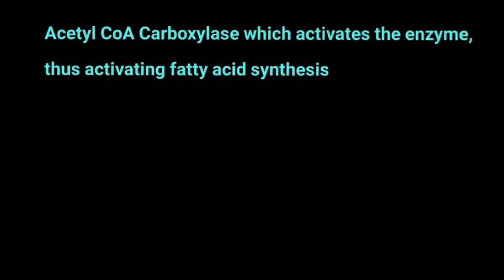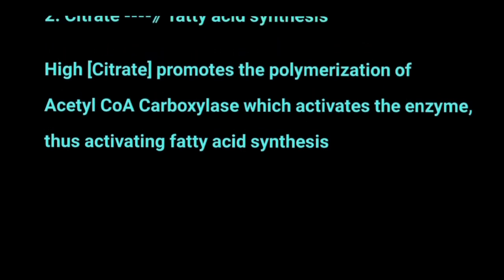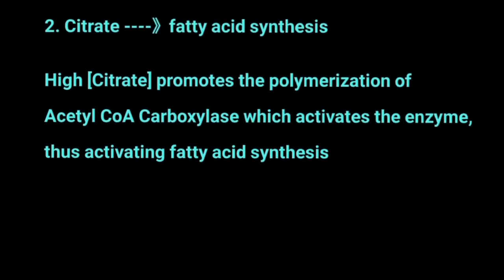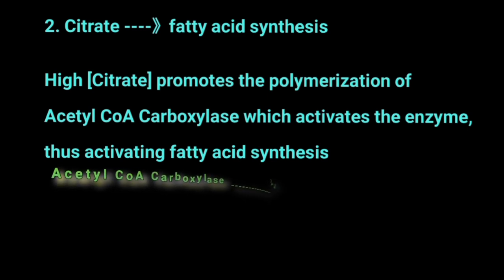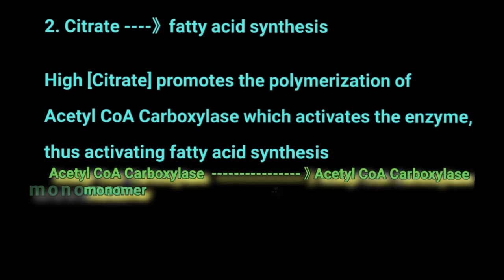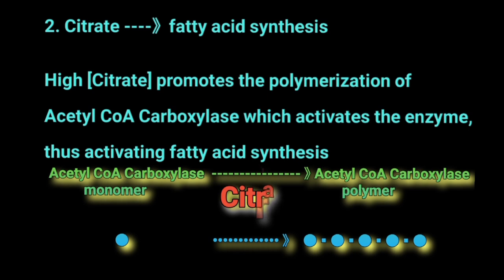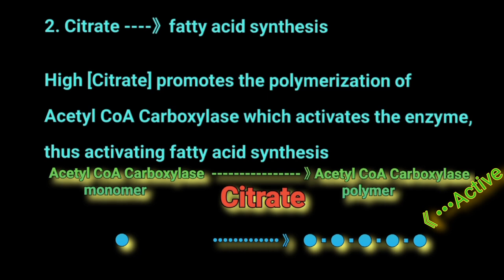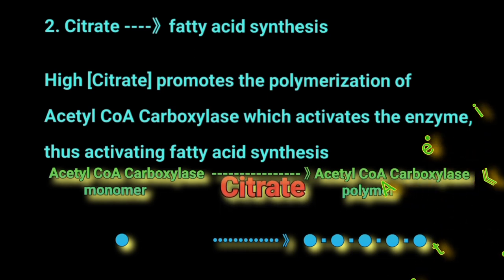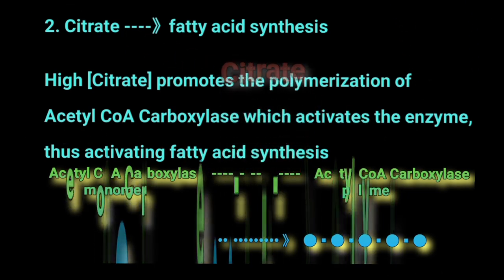The second important effect of high cytoplasmic citrate is on fatty acid synthesis. High cytoplasmic citrate can promote the polymerization of the rate-limiting enzyme in fatty acid synthesis, acetyl-CoA carboxylase. Citrate promotes the conversion of the monomer form of the enzyme to the polymer form, and the polymer form is the active form of acetyl-CoA carboxylase. So citrate acts as an allosteric activator of acetyl-CoA carboxylase in the cytoplasm during fatty acid synthesis.